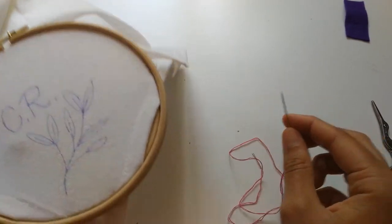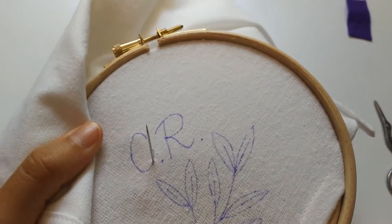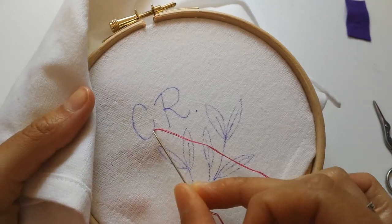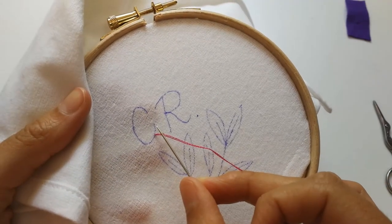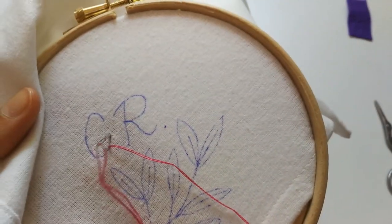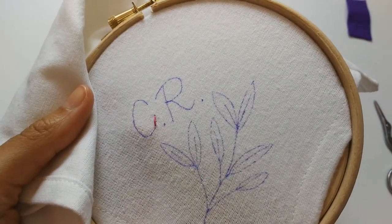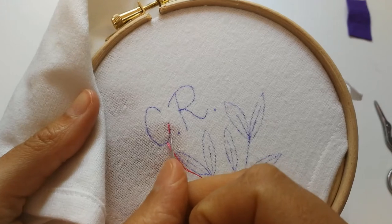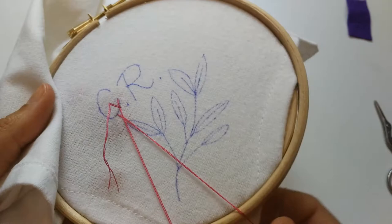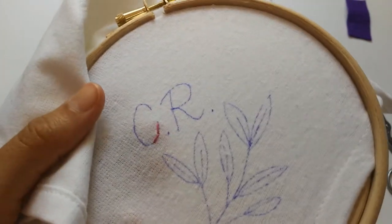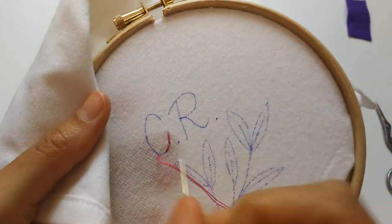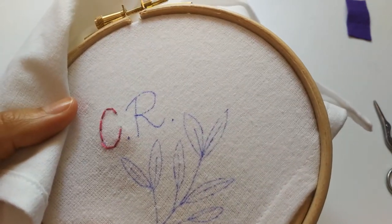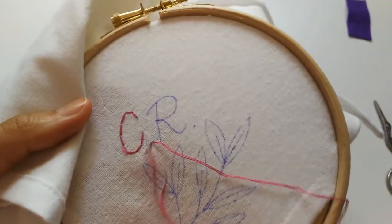To start stitching, you're going to bring your needle up from underneath your fabric, pick somewhere along your design and pull the needle through until the knot stops you. You're going to use backstitch for the whole of this design. Go back in about half a centimeter away from where you came up. And you've made your first stitch. Then go along about the same distance from where your needle first came up, and go back in to the hole that you made previously. Keep going. For the dot, I'm just going to do a very small stitch.